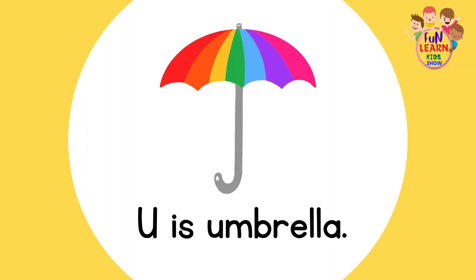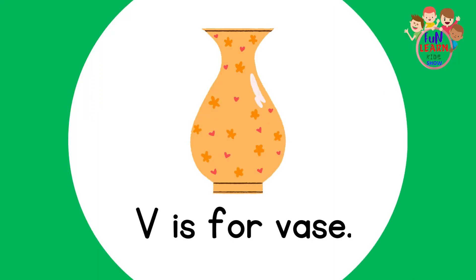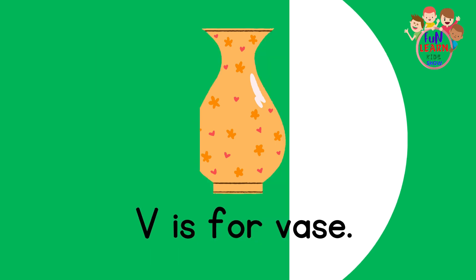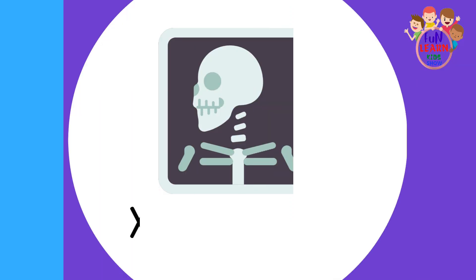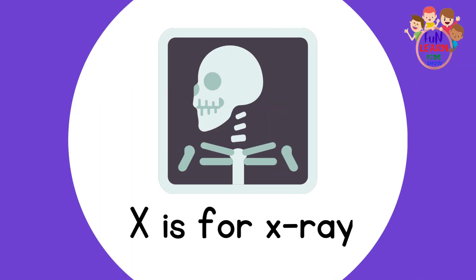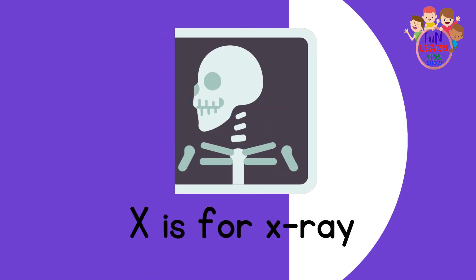U is for Umbrella. V is for Bus. W is for Watermelon. X is for X-Men.